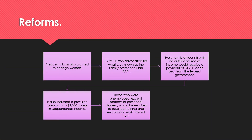Nixon also wanted to change welfare. In 1969, Nixon advocated for what was known as the Family Assistance Plan, or FAP. Every family of four with no outside source of income would receive a payment of $1,600 each year from the federal government. It also included a provision to earn up to $4,000 a year in supplemental income. Those who were unemployed, except mothers of preschool children, would be required to take job training and reasonable work that was offered to them.